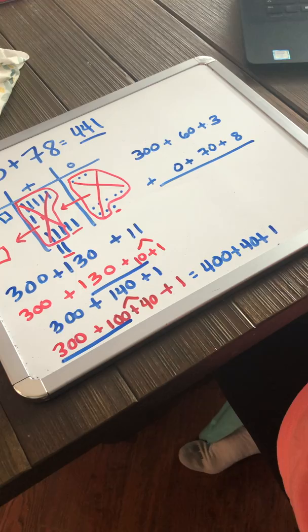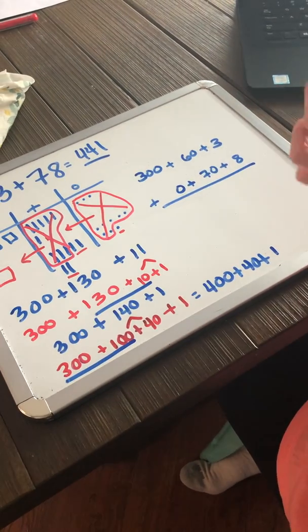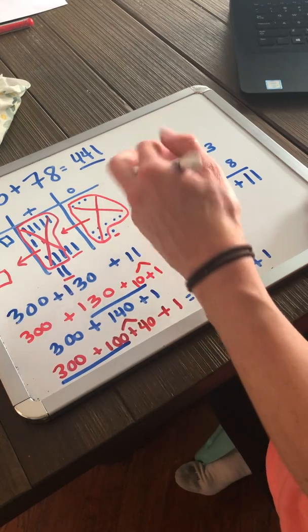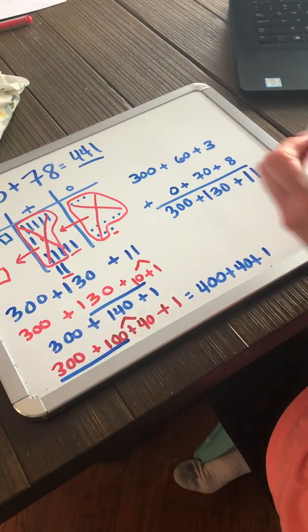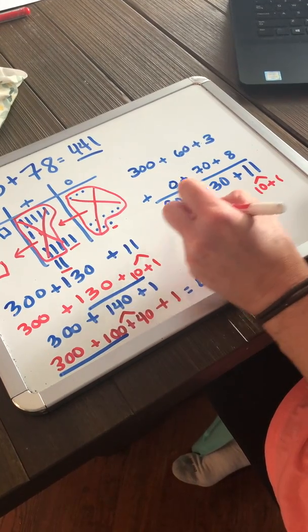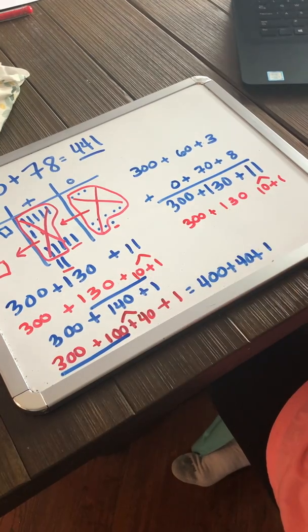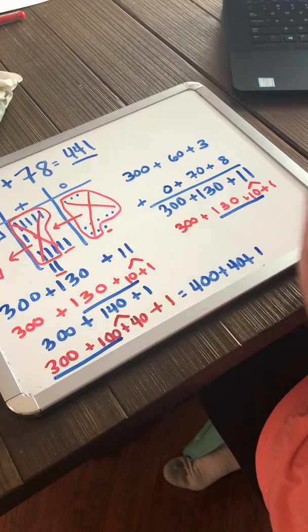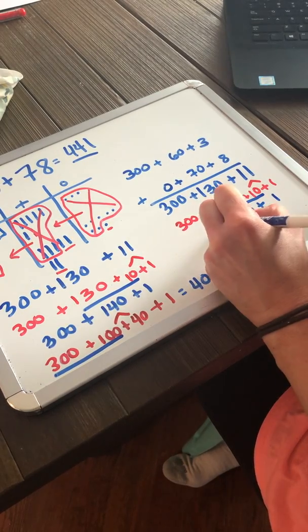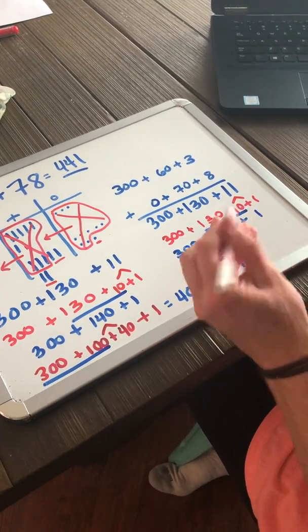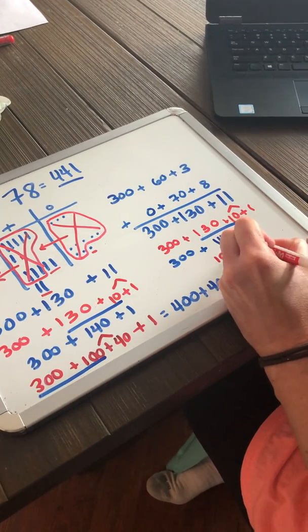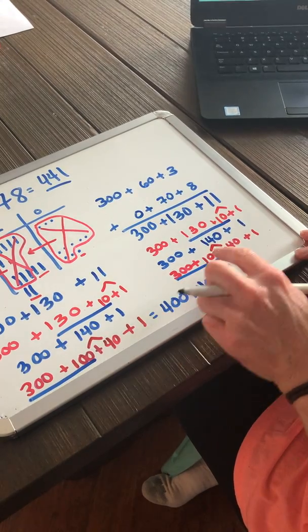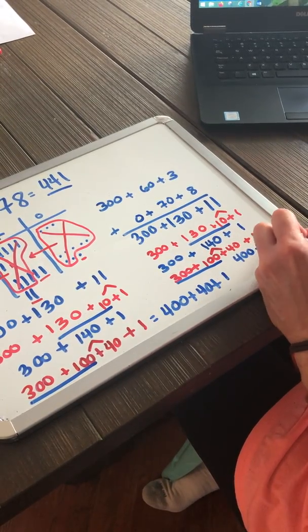Let's look at this with expanded form. 3 plus 8 is 11 1s. 60 plus 70 is 130. And 300 plus 0 is 300. I'm going to break apart 11 into a 10 plus 1. I've got to combine my like values. So I just regrouped and exchanged. I've grouped together 10 1s and exchanged them for a 10. So I now have 140. But look at that 140. I can break apart 140 into 100 plus 40. If I combine like values, I get 300 plus 100, which is 400. And then I have 40 plus 1. I get the exact same answer by solving it this way.